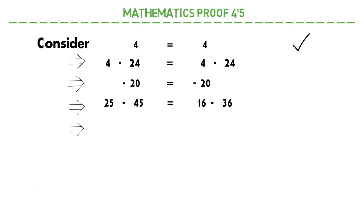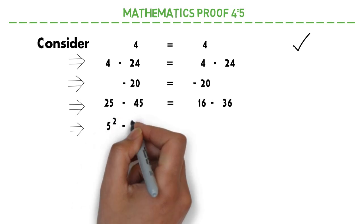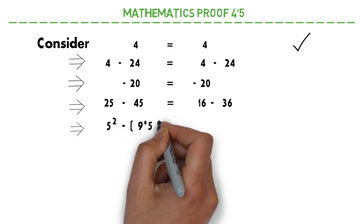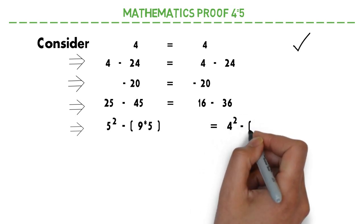25 can be written as 5 square. 45 can be written as 9 into 5. In the same way, 16 can be written as 4 square and 36 can be written as 9 into 4.